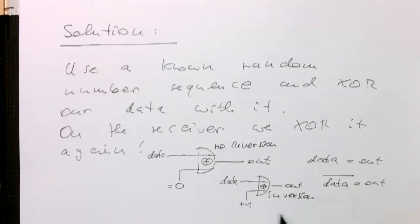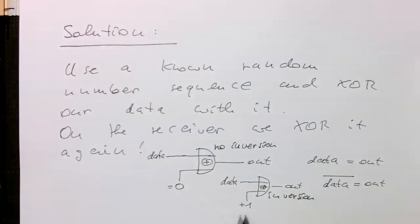So obviously if we are creating a stream on the transmitter which with zeros and ones and XORs with our data, and then we just invert it back with the stream here on the receiver, we're able to recover our data and creating also random number sequence with that.